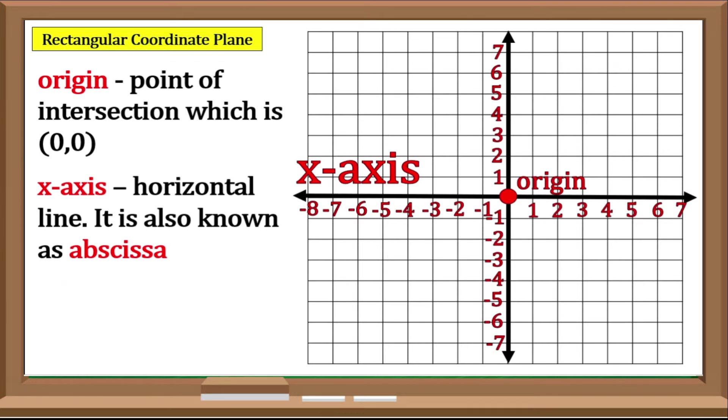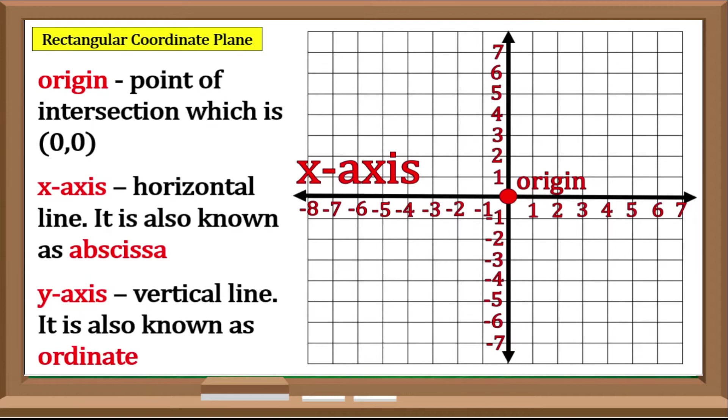The Y-Axis is the vertical line that can be found on the plane. It is also known as the Ordinate.